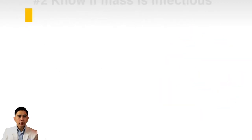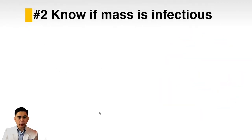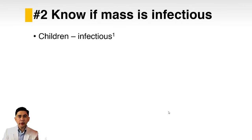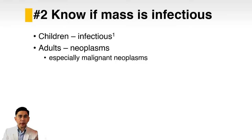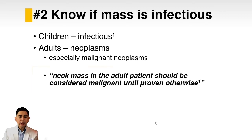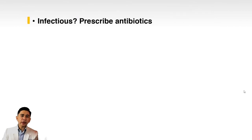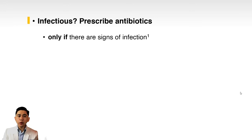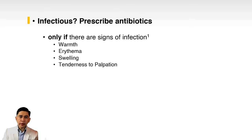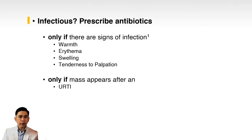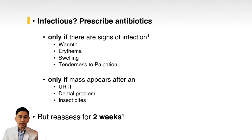Second, know if the mass is infectious. In children, neck masses are usually infectious, but in adults they are more often neoplastic and usually malignant. There is an adage: a neck mass in an adult patient should be considered malignant until proven otherwise. Prescribe antibiotics only if there are classic signs of infection — warmth, erythema, swelling, tenderness — or if the mass appeared after an upper respiratory tract infection, dental problem, or insect bite. However, you should reassess the mass after two weeks.